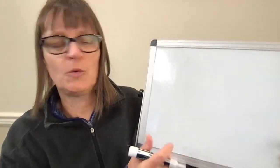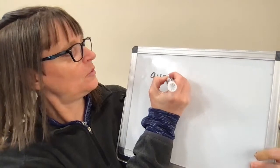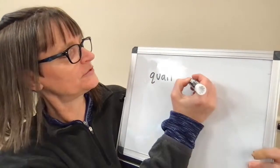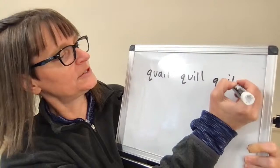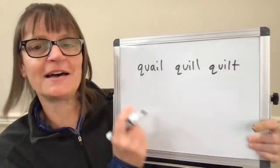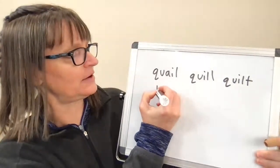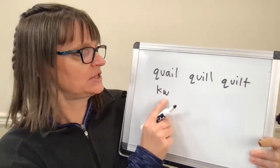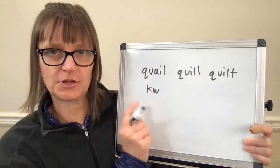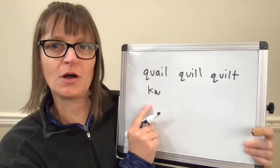Mama Dave wants to know about 'quail,' 'quill,' and 'quilt.' Let's write them all out. All of these have the letters QU — say the sounds: 'kuh' and 'wuh,' 'quuh.' If that's challenging for you, try just doing your W sound — 'wuh' — and then add the K: 'quuh.'